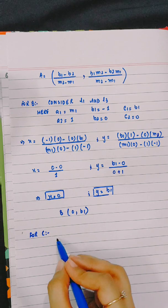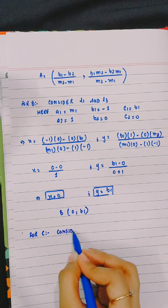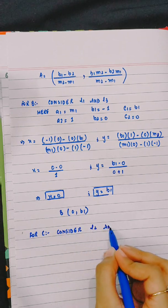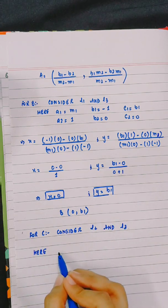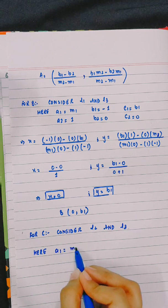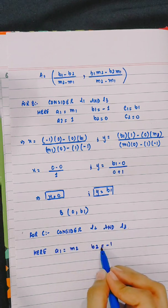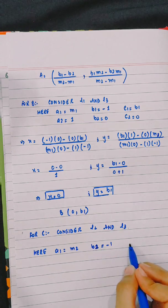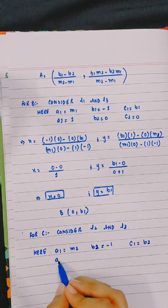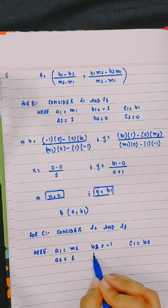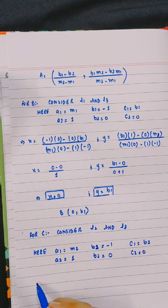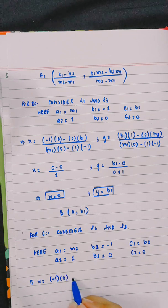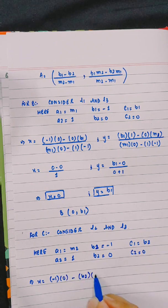Now for point C, consider L2 and L3. Here a1 = m2, b1 = -1, c1 = b2; a2 = 1, b2 = 0, c2 = 0. Solving: x = (-1 * 0 - b2 * 0) / (m2 * 0 - 1 * (-1)).